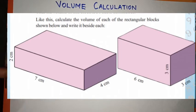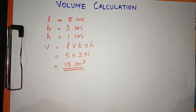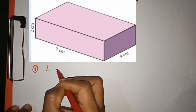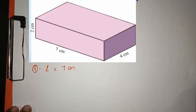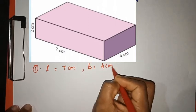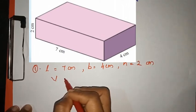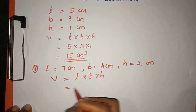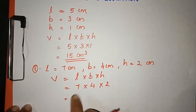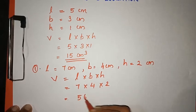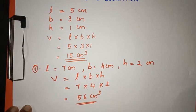We are going to do a few more rectangular blocks. The length is 7 cm, the width is 4 cm, and the height is 2 cm. Volume is equal to length × breadth × height, that is 7 × 4 × 2. We get 7 × 4 = 28, and 28 × 2 = 56 cm³.